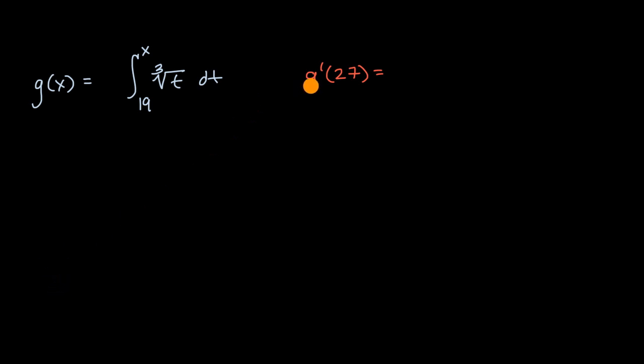We want to figure out what g'(x) is and then evaluate that at 27. The best way to do that is by taking the derivative of both sides of this equation. So let's take the derivative of both sides.